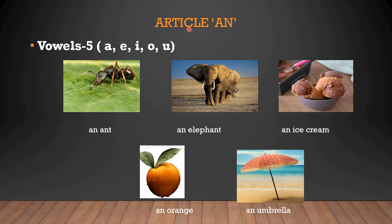Here the usage of article an. So what are the vowels? A, E, I, O and U. These are the five vowels. And here we have added the article an in front of the vowel sound words. An ant, an elephant, an ice cream, an orange, an umbrella.